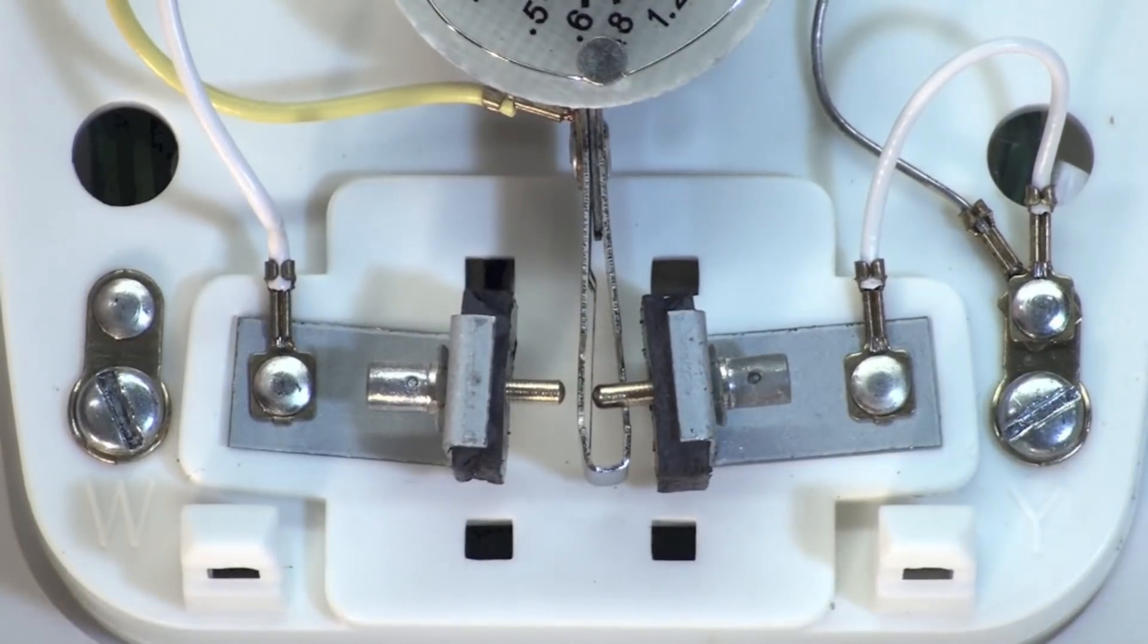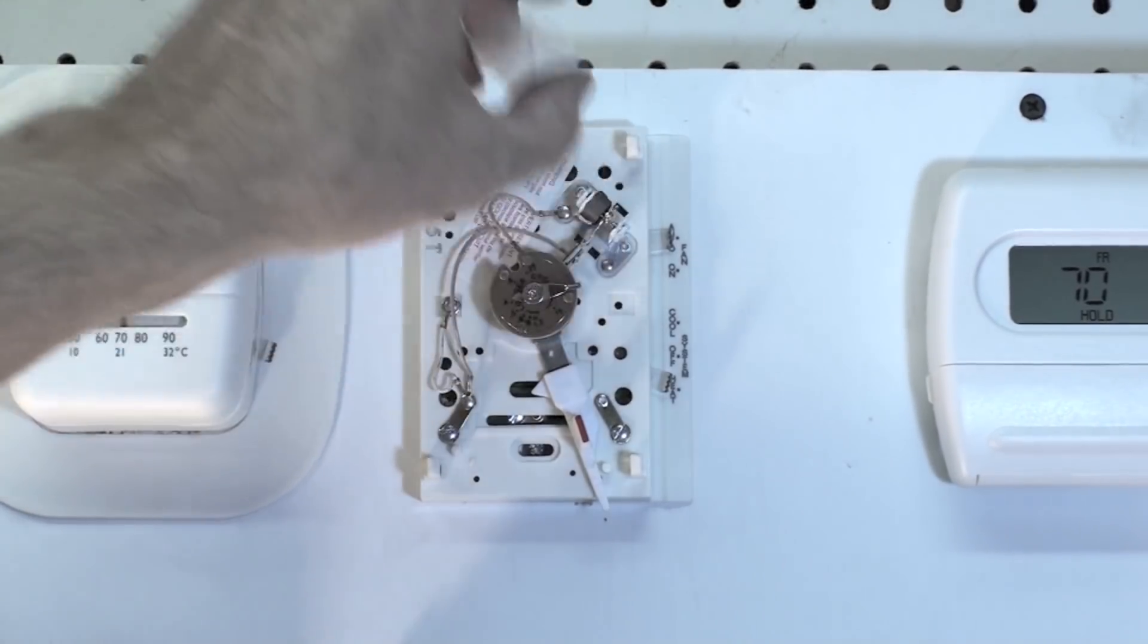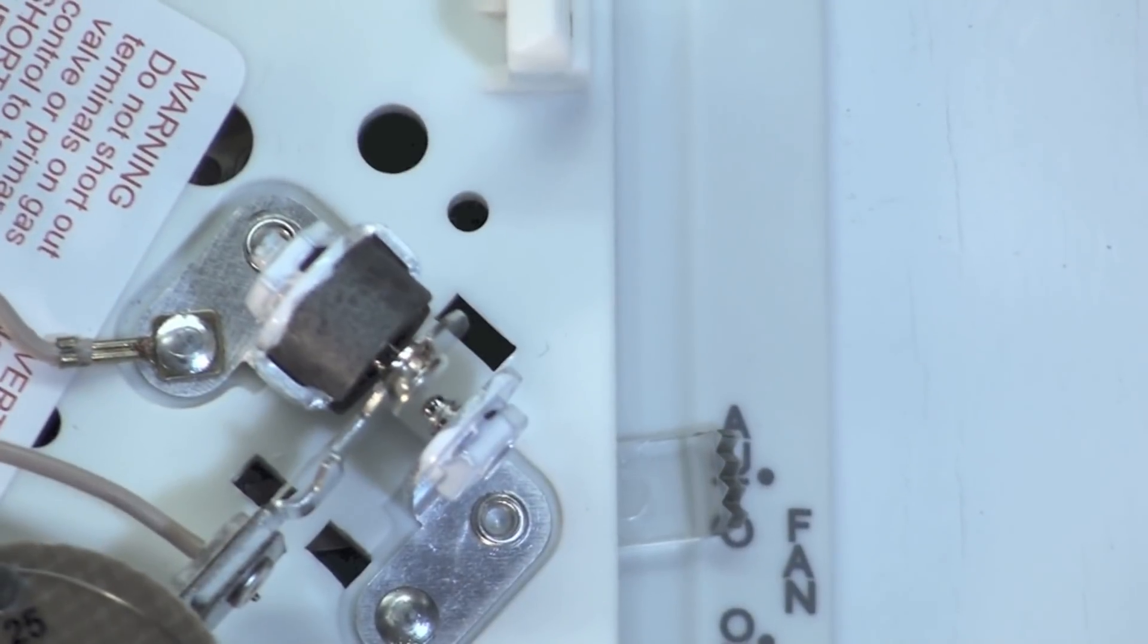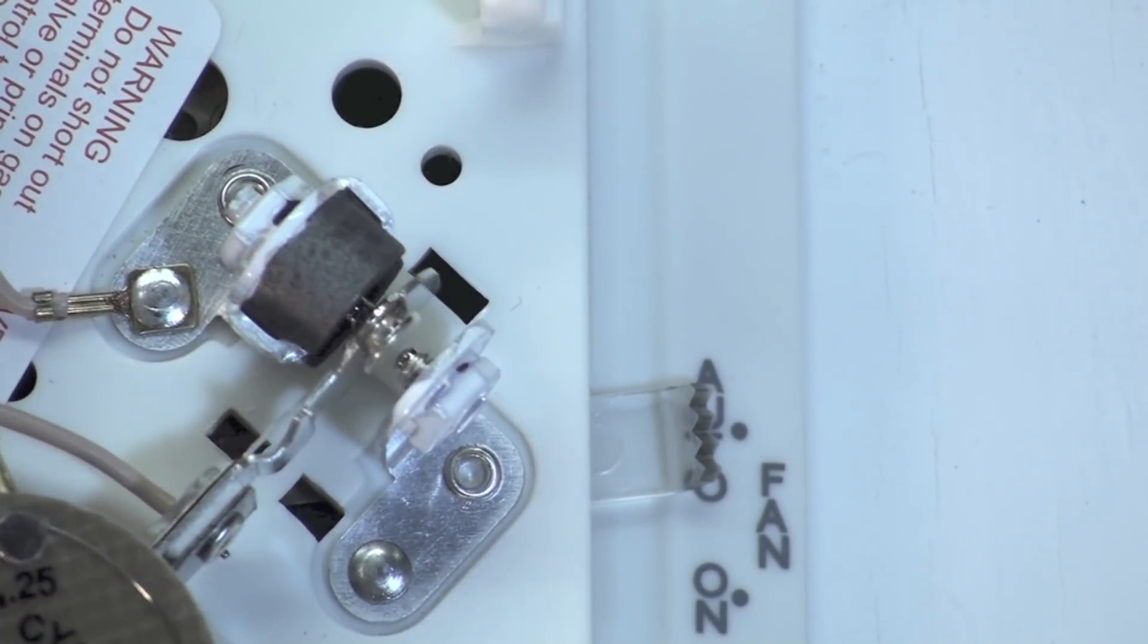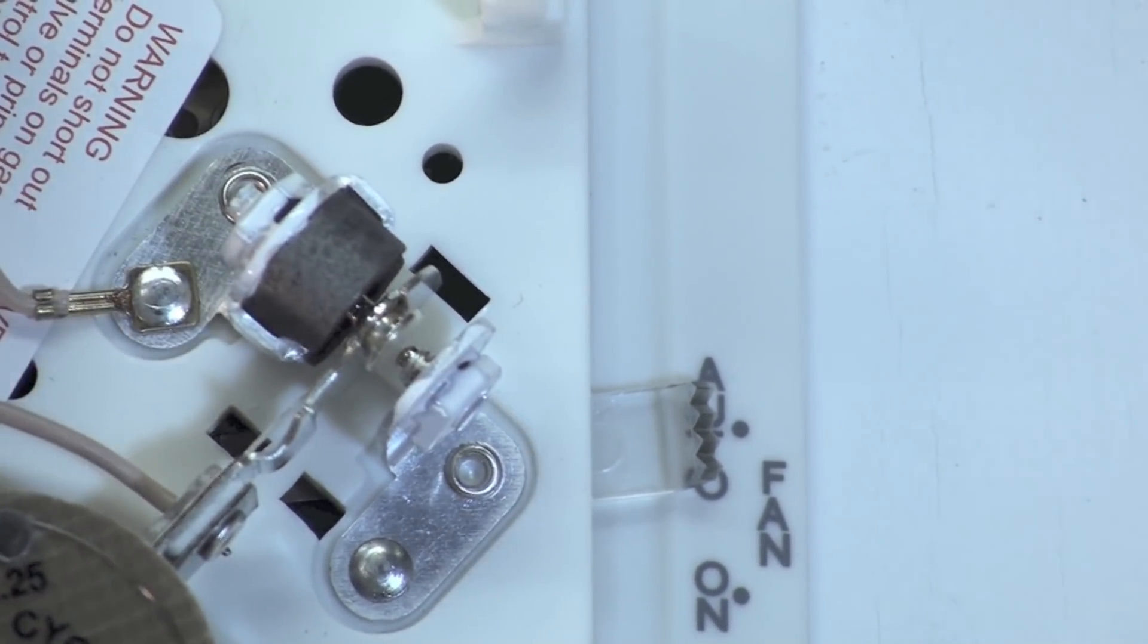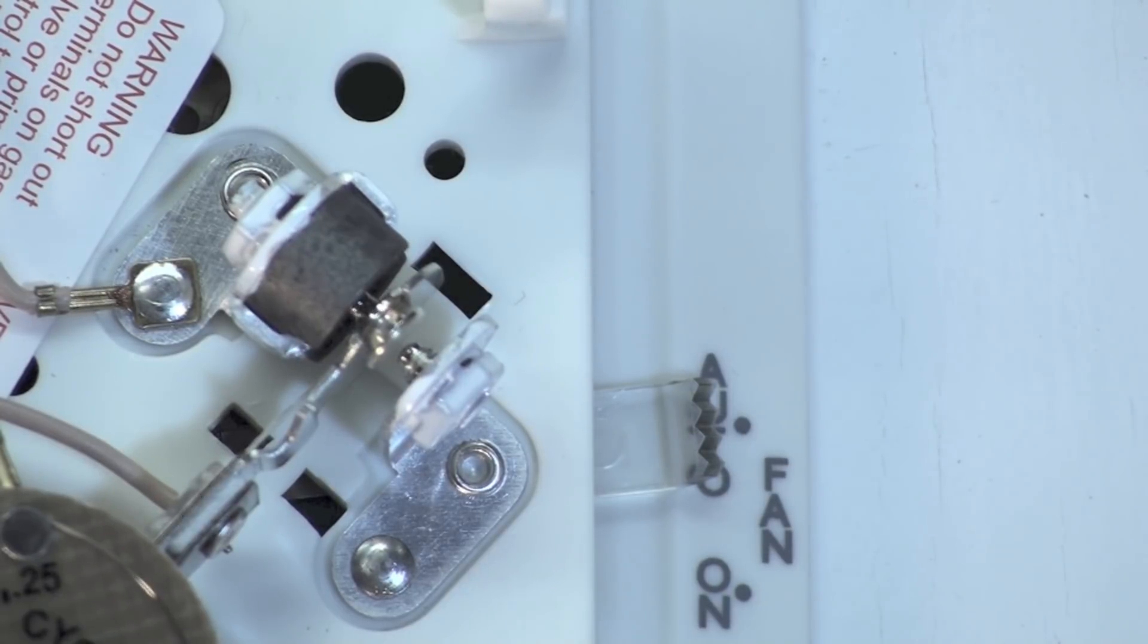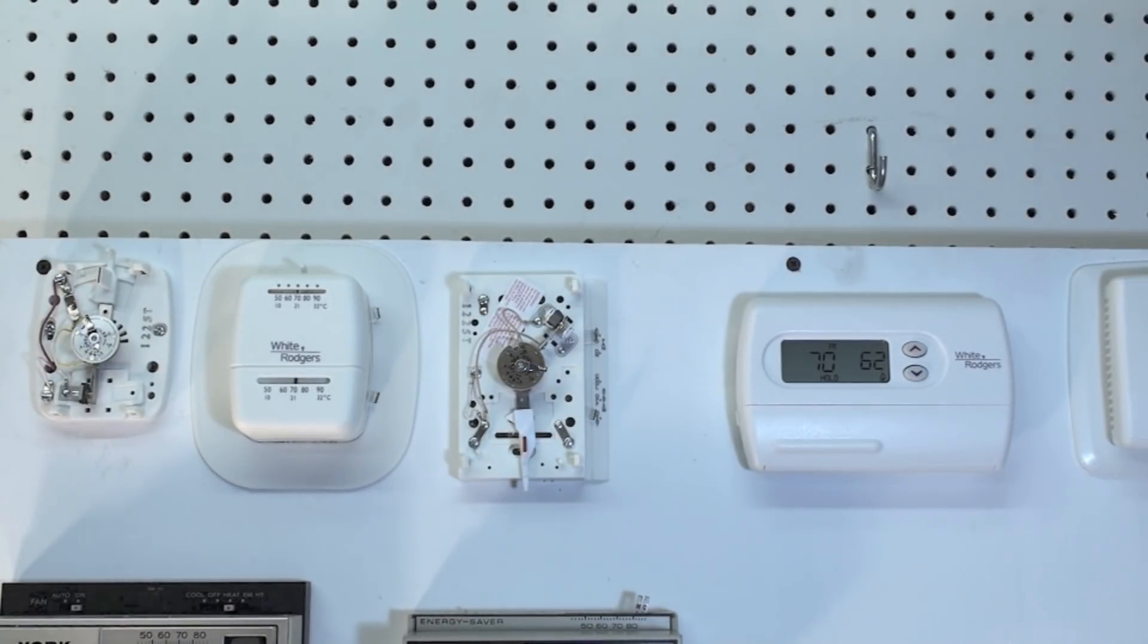This one here essentially has the same thing. There's a set of contacts there, and as the lever moves back and forth they go back and forth. Again there's a magnet right here. Very simple little thermostats. These thermostats, even though they're very simple, are actually pretty accurate and pretty dependable. Some of those things have been on the wall for many, many years, never give them any trouble. No electronics in them. You've got some electronic ones over to the right, we'll talk about those in another video.